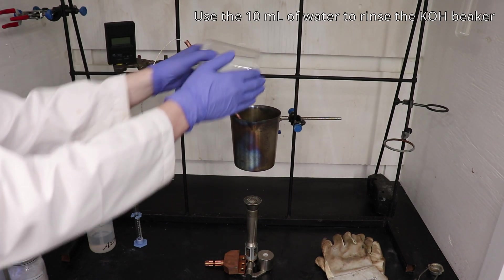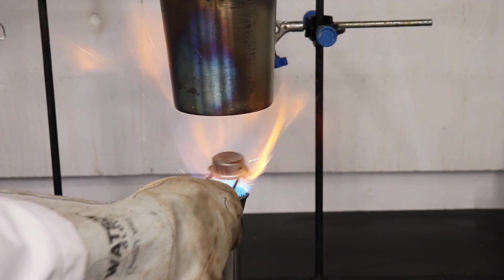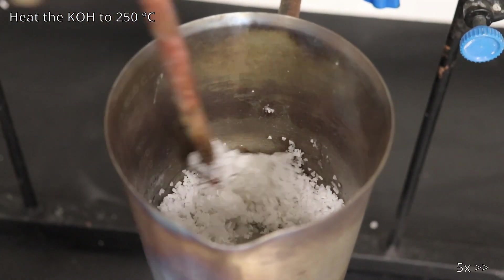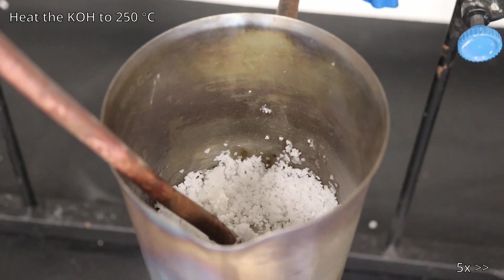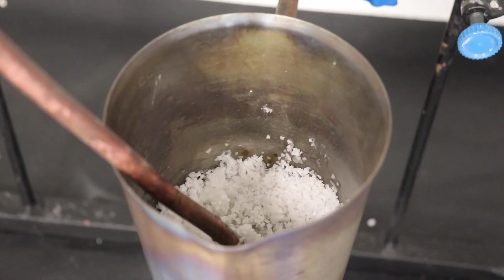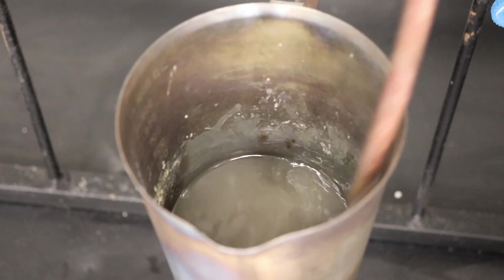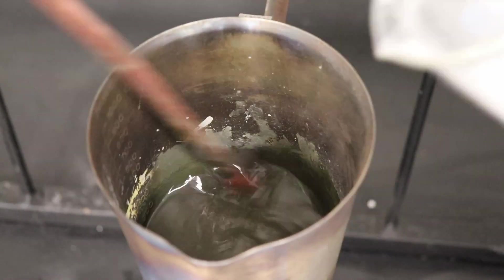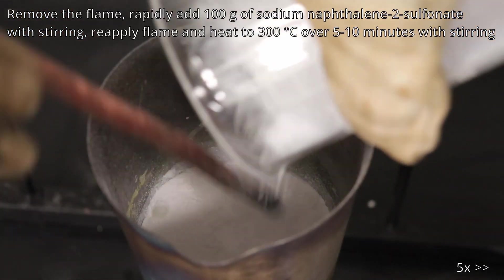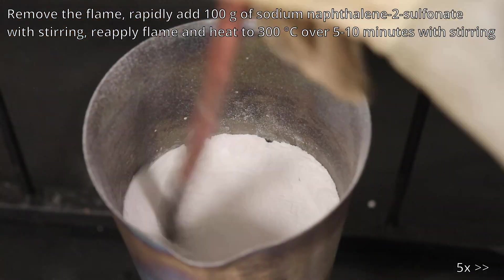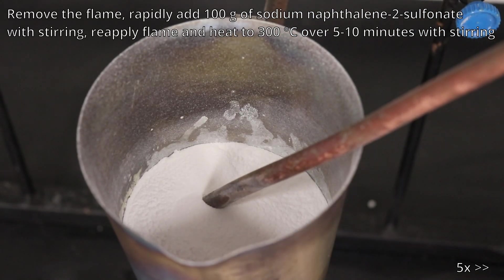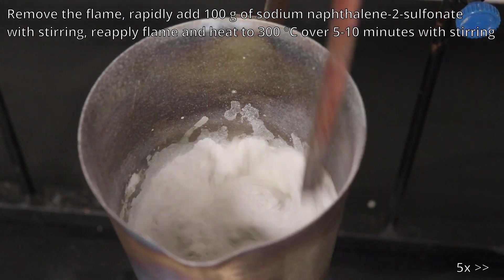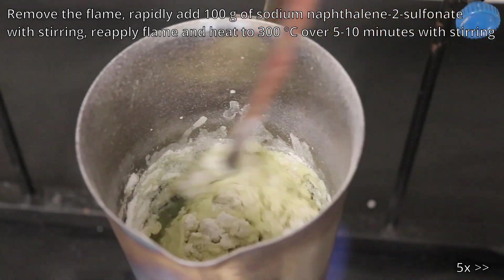The crucible was then heated to 250 degrees Celsius with a Meker-Fisher burner. Once the temperature of 250 degrees Celsius was reached, the flame was removed, and the powdered sodium naphthalene 2-sulfonate was added rapidly with stirring. The flame was reapplied, and the mixture was heated to 300 degrees Celsius over 5-10 minutes with constant stirring.